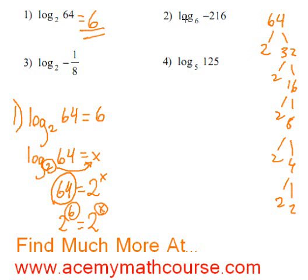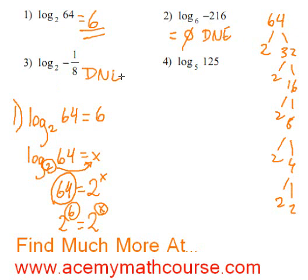Now, how about number 2: log base 6 of negative 216? Well, that's a trick question, because there's no solution here. This just doesn't exist, because there's no such thing as the log of a negative number. Number 3 is the same thing — another trick question. It doesn't exist, because the log of a negative number just doesn't happen at all.